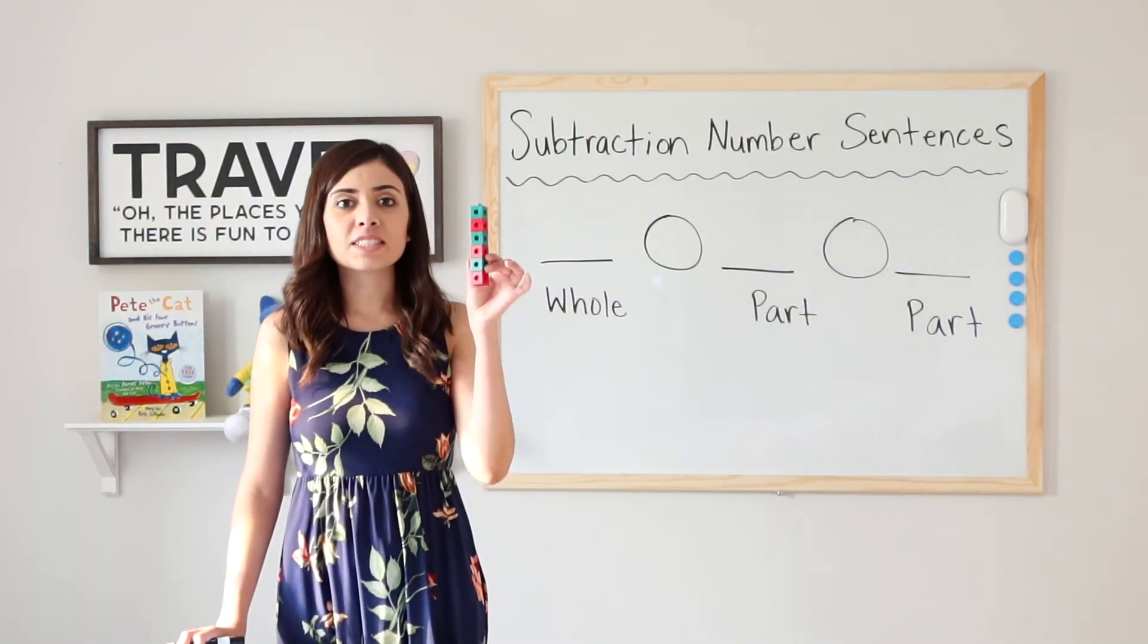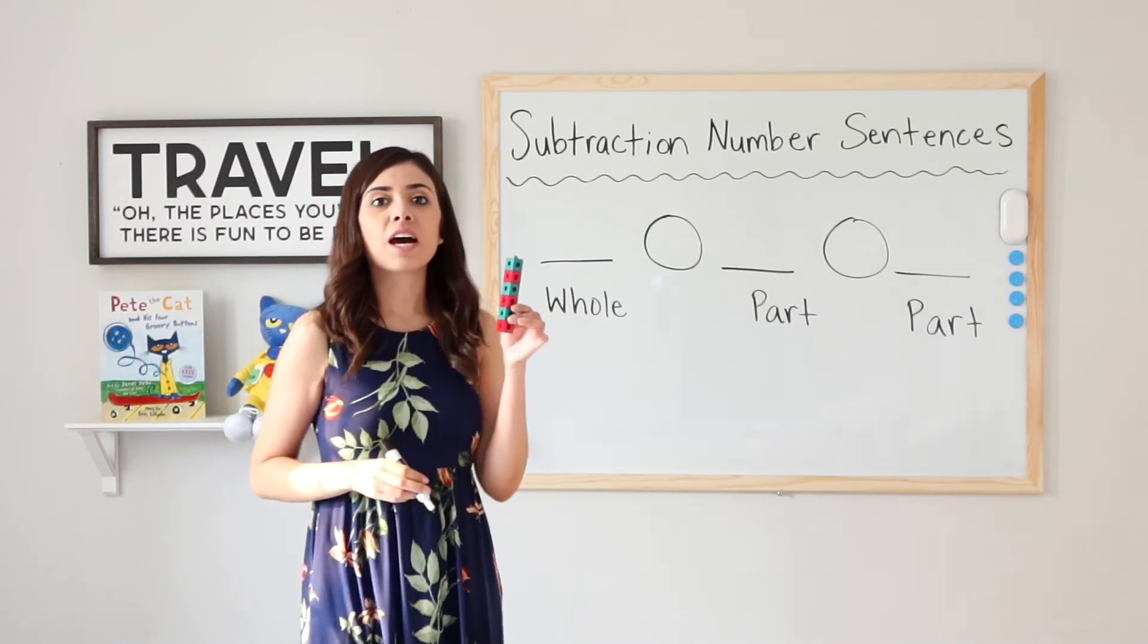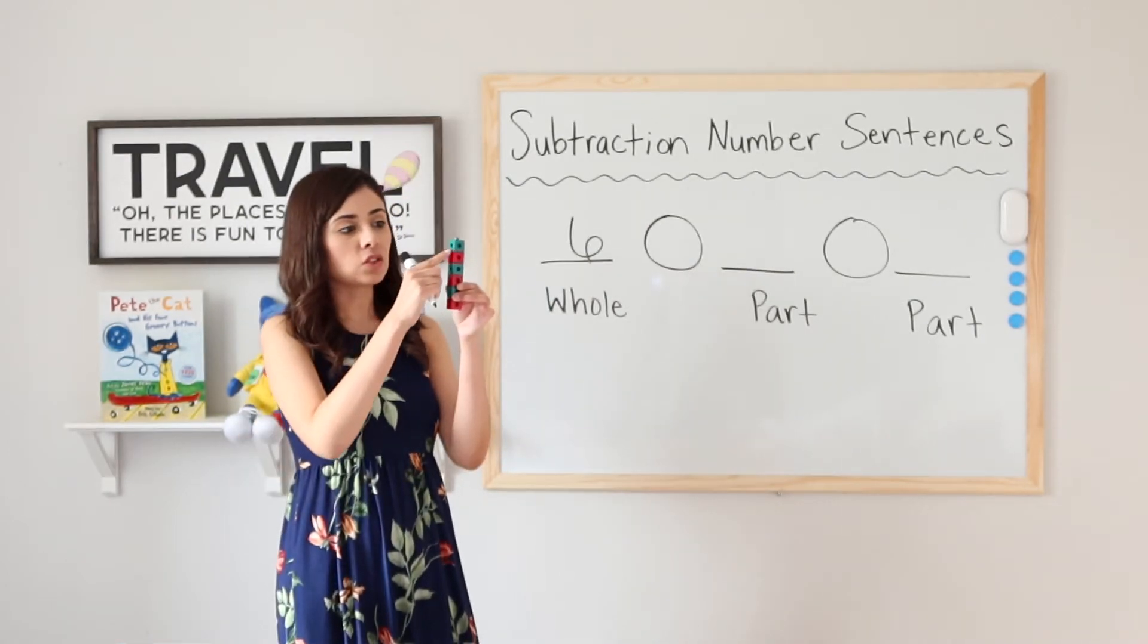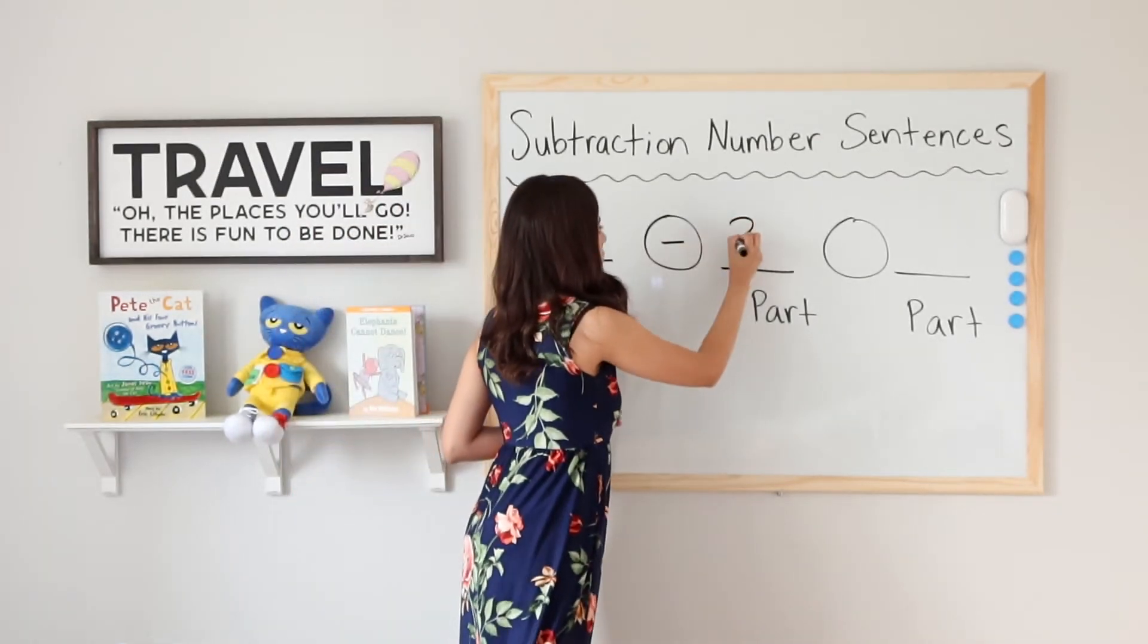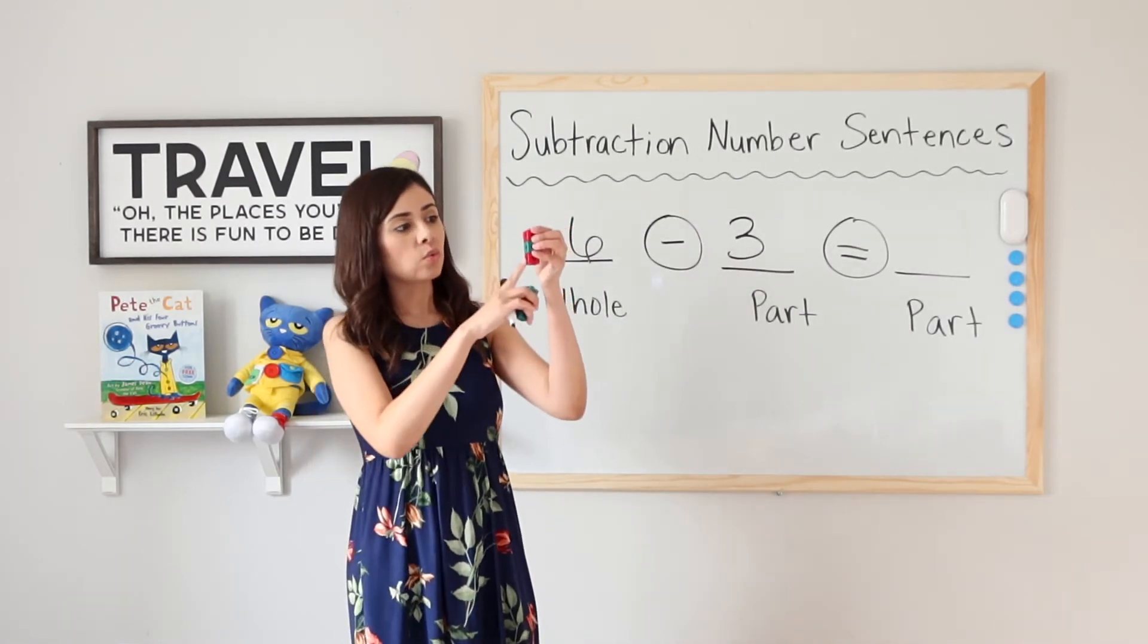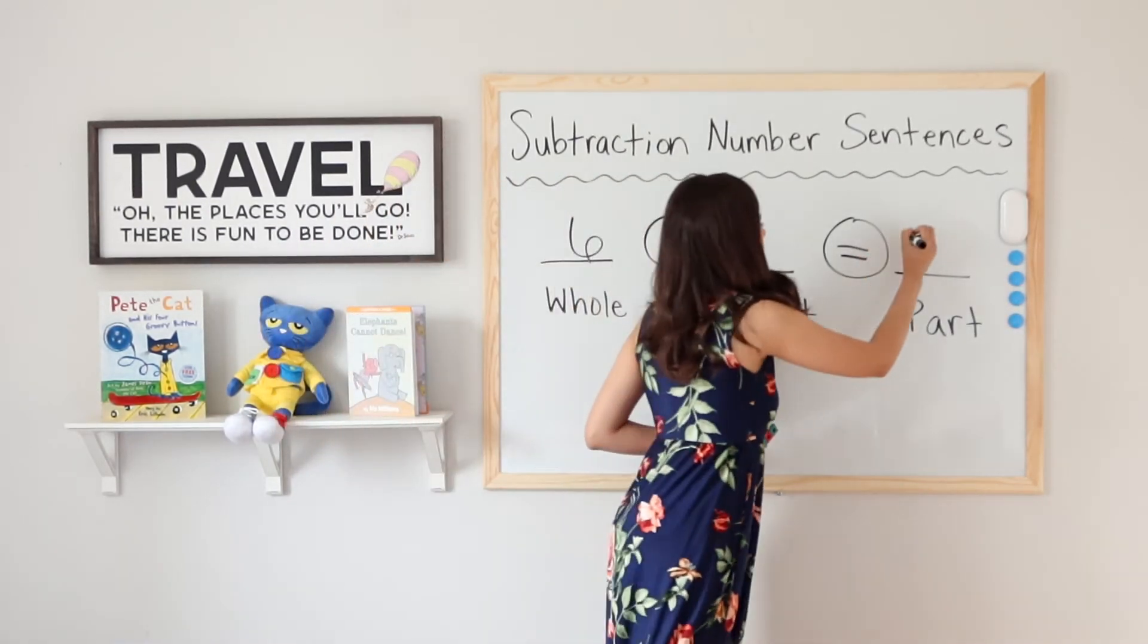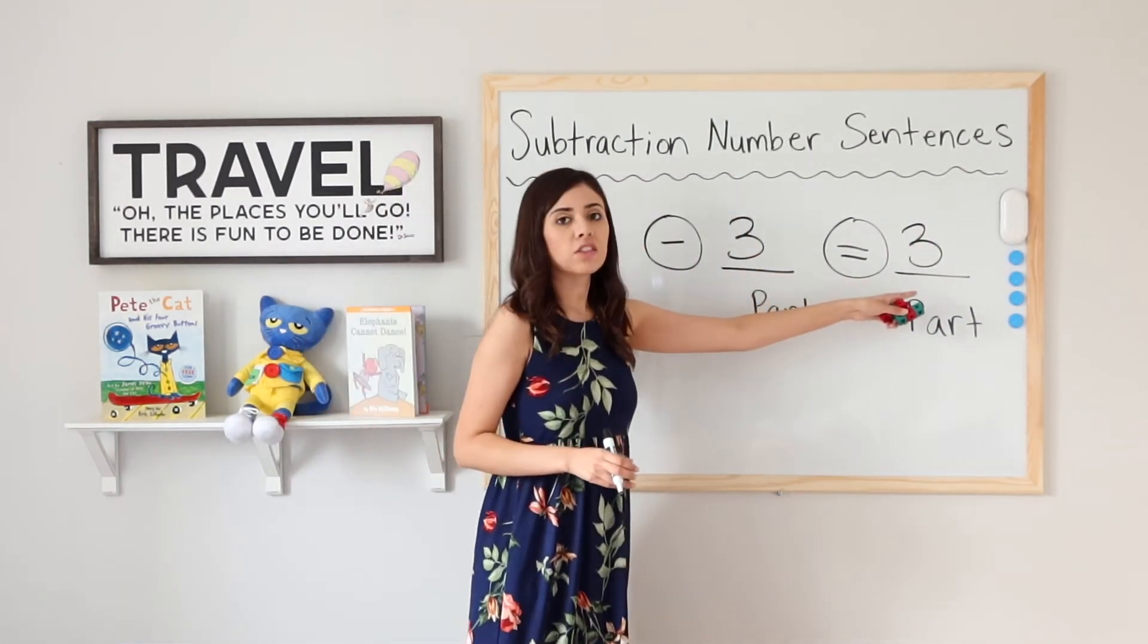Now I have 6 counting cubes. 1, 2, 3, 4, 5, 6. I will write my whole down. 6 take away 3. 1, 2, 3. Break that apart. Minus 3 equals what? How many do I have left? 1, 2, 3. That means that 6 take away 3 equals 3. Very good. 6 minus 3 equals 3.